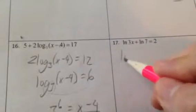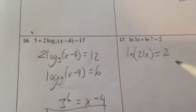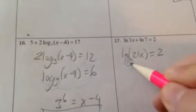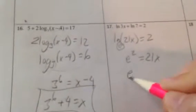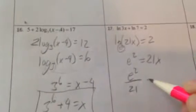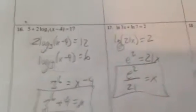Smoosh these together. ln of 21x equals 2. So the base is e. So e to the second power equals 21x. So e to the second over 21 equals x. Check.